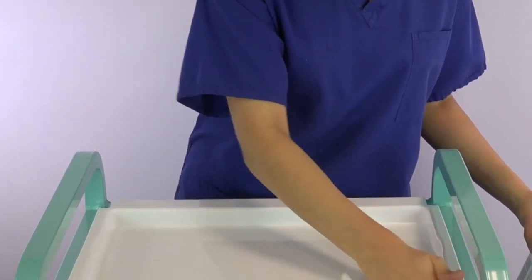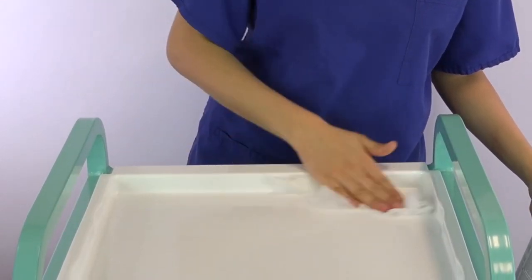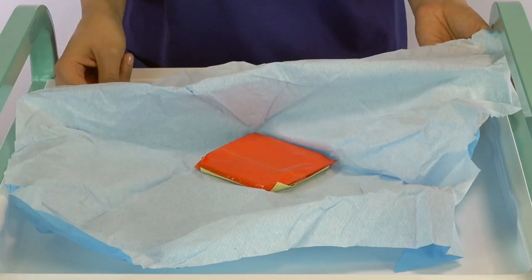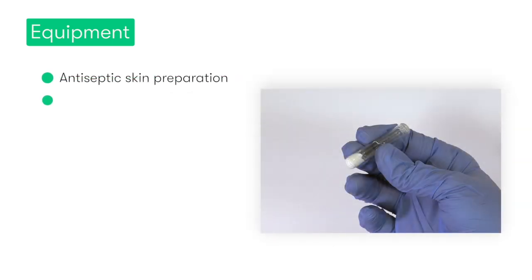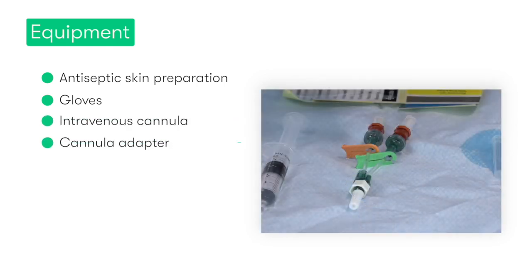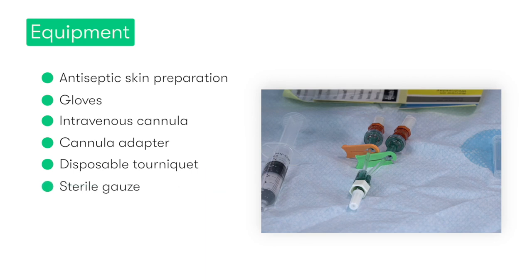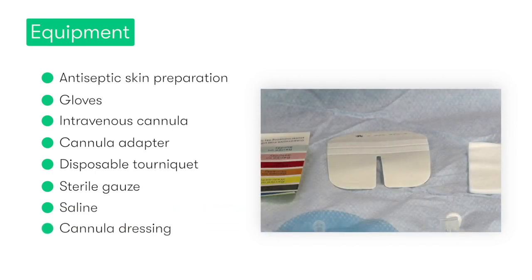We can now set up our equipment on our clean treatment trolley. The equipment we need for cannulation includes antiseptic skin preparation, non-sterile gloves, a cannula, an adapter for the cannula device, a tourniquet, some sterile gauze, saline solution, a cannula dressing, and a sharps disposal bin.